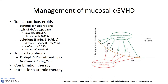Clobetasol and budesonide are both higher-potency topical steroids that I sometimes go to if dexamethasone isn't working effectively enough. These have to be compounded — they're not commercially available in solution form.